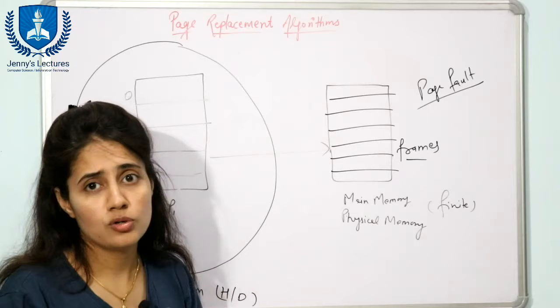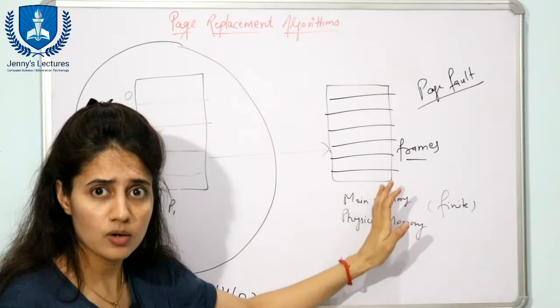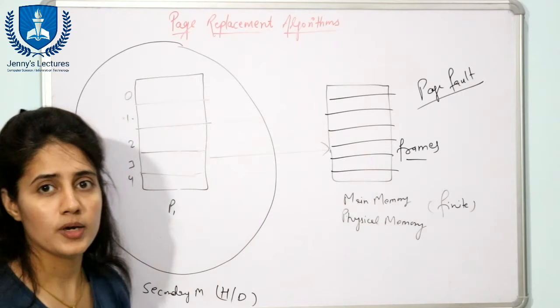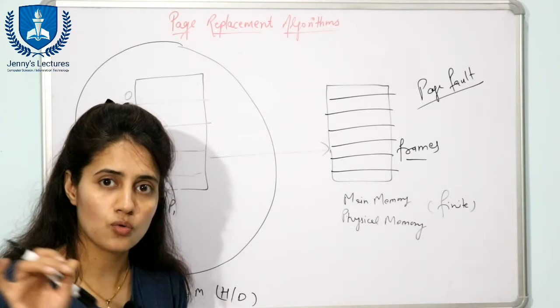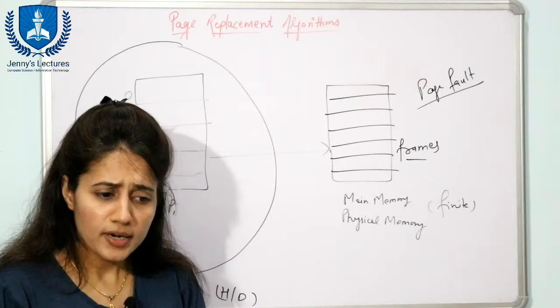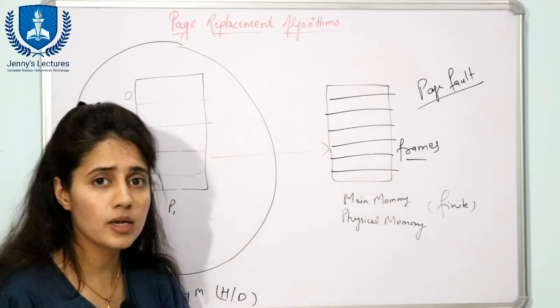There are many algorithms to decide which page to replace when main memory is full and all frames are occupied. In this video, we will discuss the First In First Out (FIFO) algorithm. Additionally, the operating system must know which page of which process is in main memory and which is in secondary memory.